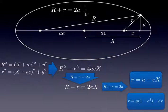Here our starting point is the definition of the ellipse as the points in the plane for which the sum of the distances to the two foci is constant and equal to two times the semi-major axis.